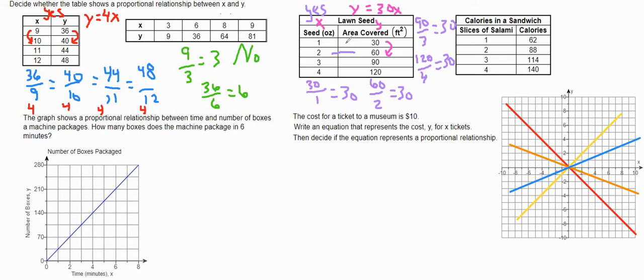And the last one on here, calories in the sandwich. 62 divided by 1, that's pretty simple, that is equal to 62. But 88 divided by 2 is 44, and those are not the same. So this last one here is not proportional.